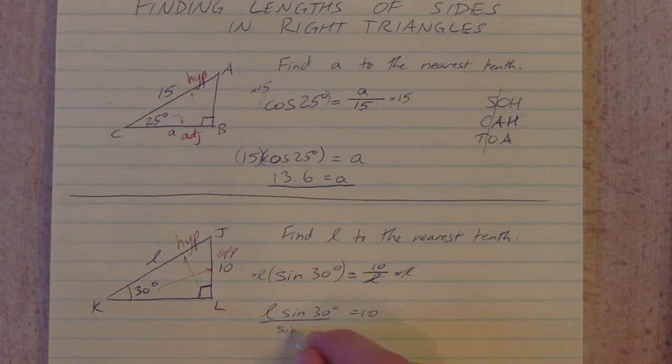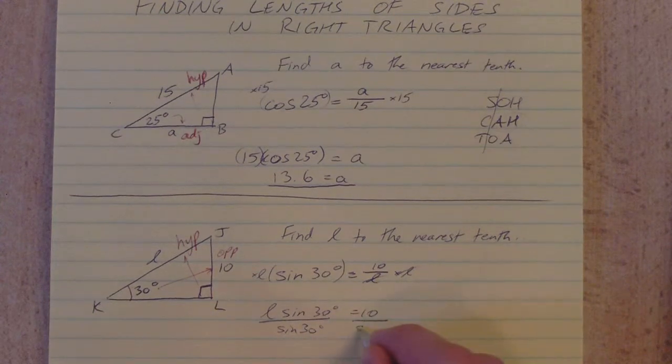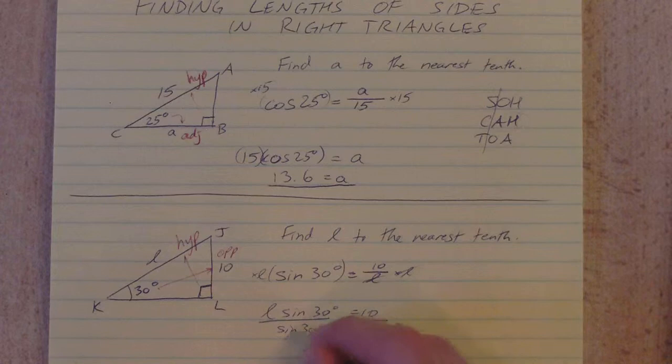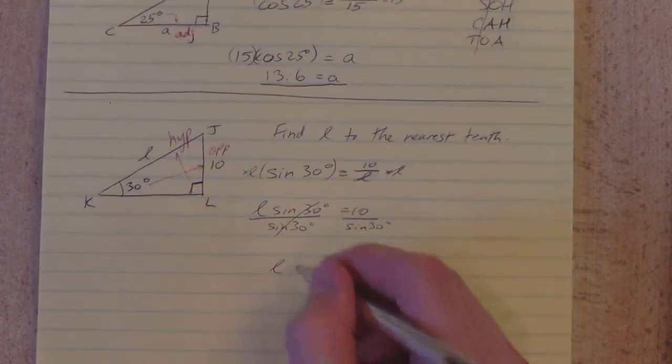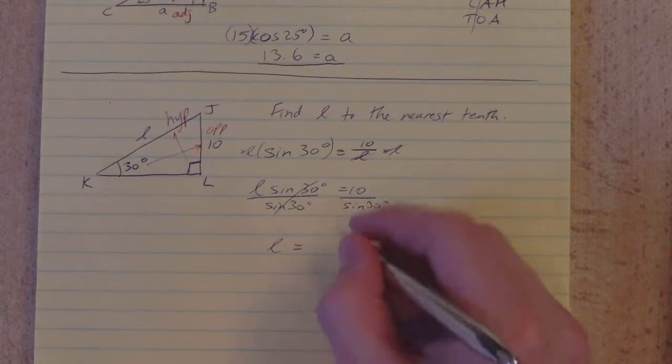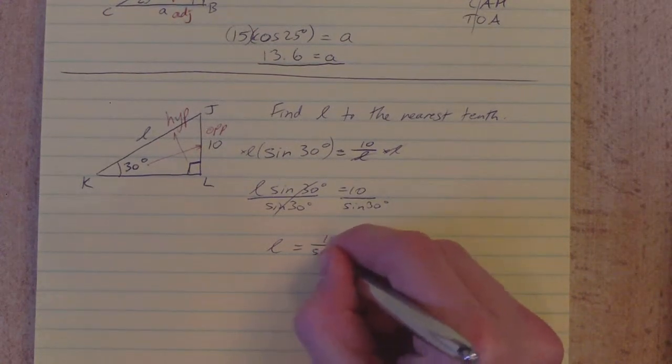I need to divide both sides now by the sine of 30 degrees. And I'm left with L is equal to, I hope you can see there, L is equal to 10 divided by the sine of 30 degrees.